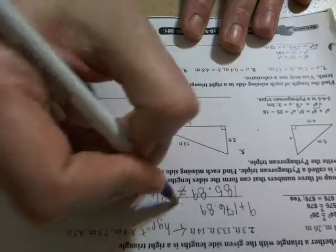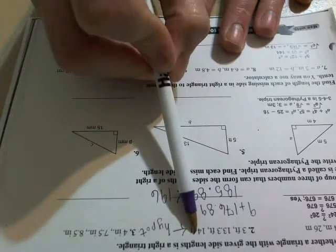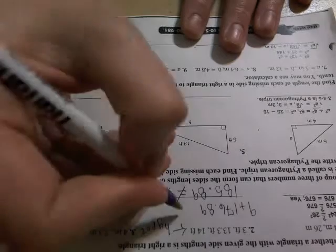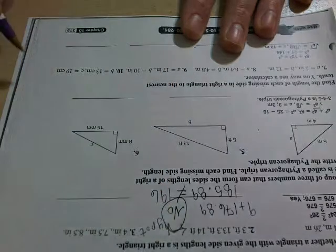As you can see, these two numbers do not end up being equal. Remember, the theorem says that the sum of the legs squared has to be the same as the hypotenuse squared, and that did not happen here. So no, this cannot be a right triangle.